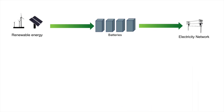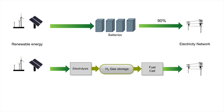So batteries work really simply. They just take the renewable energy, they store it, and when you need electricity, you just take the electricity back out. One thing to know about batteries is that the round trip efficiency of the electricity is about 90%, so you only get 90% of what you put in. Now, if we look at hydrogen generation, it's a bit more complex — we have the electrolysis, we have gas storage, and then we use a fuel cell to generate the electricity. And the round trip efficiency of this cycle is only 40%, so again, it looks like batteries are going to win out.